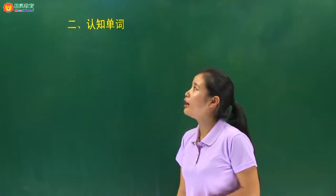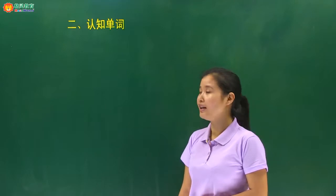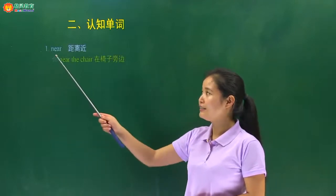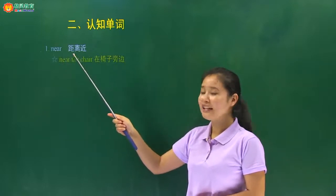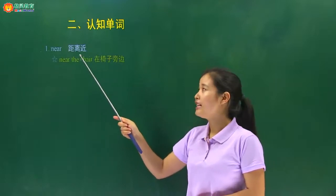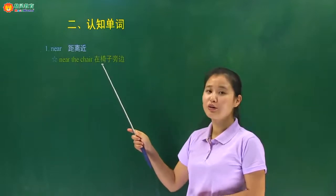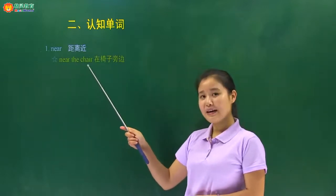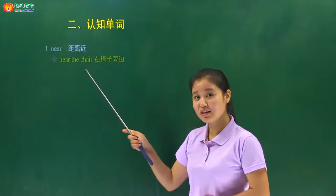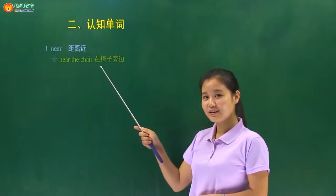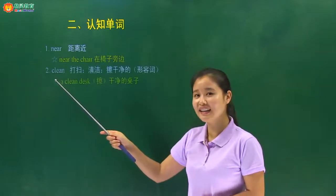那下面进行到我们第二个部分的学习，那就是我们的认知单词。本单元认知单词包括五个。First one，near，它的意思是距离近，或者是在什么什么旁边。例如：near the chair，在椅子旁边；near the desk，在桌子旁边。